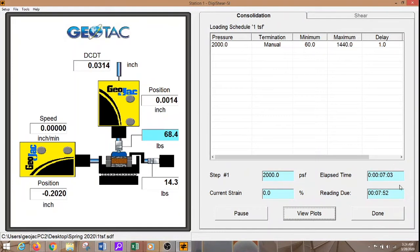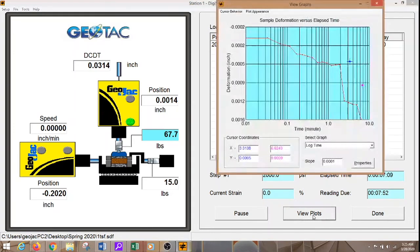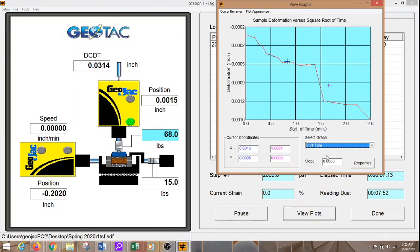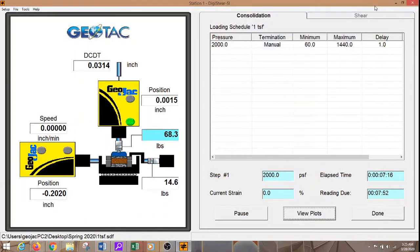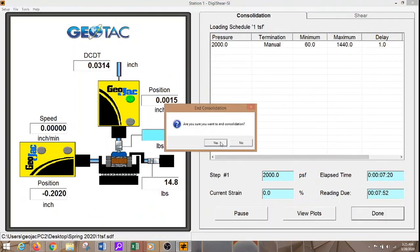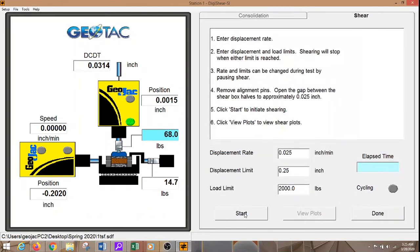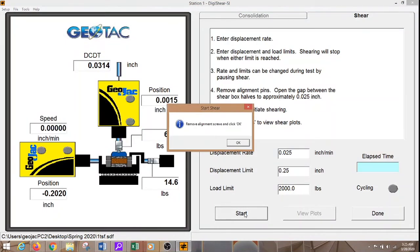At this point the consolidation should be done and we will just look at the plot to confirm that and move over to shear. Yep. Looks like we are good on consolidation and we will just go over to shear this moment. And start. Yep. Remove the black screws. And we are good to go.